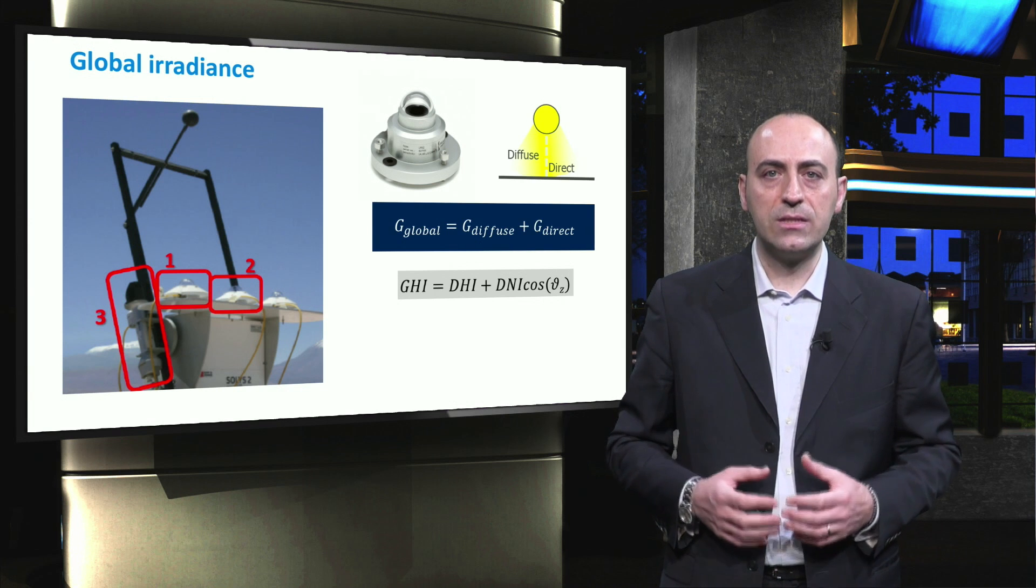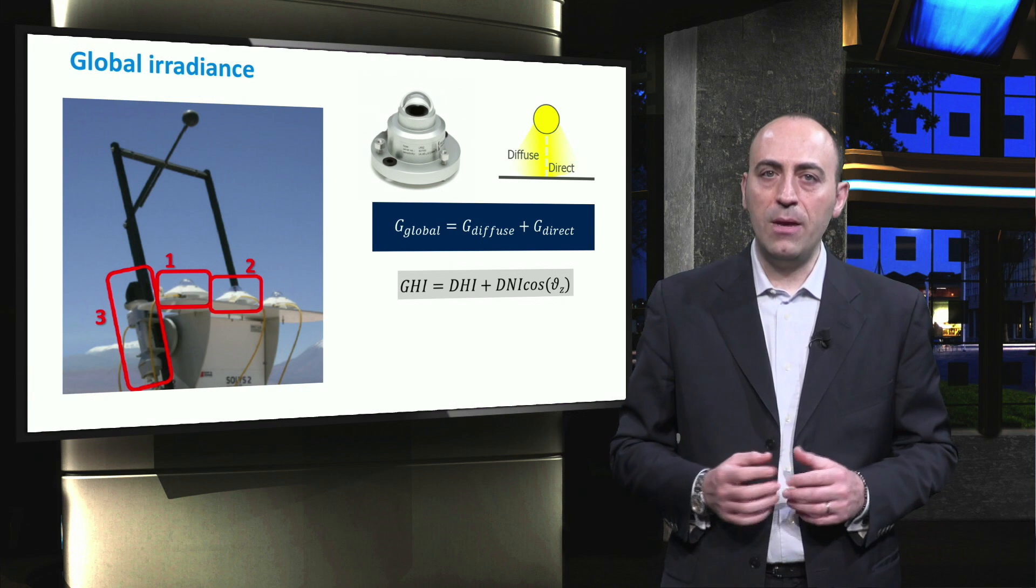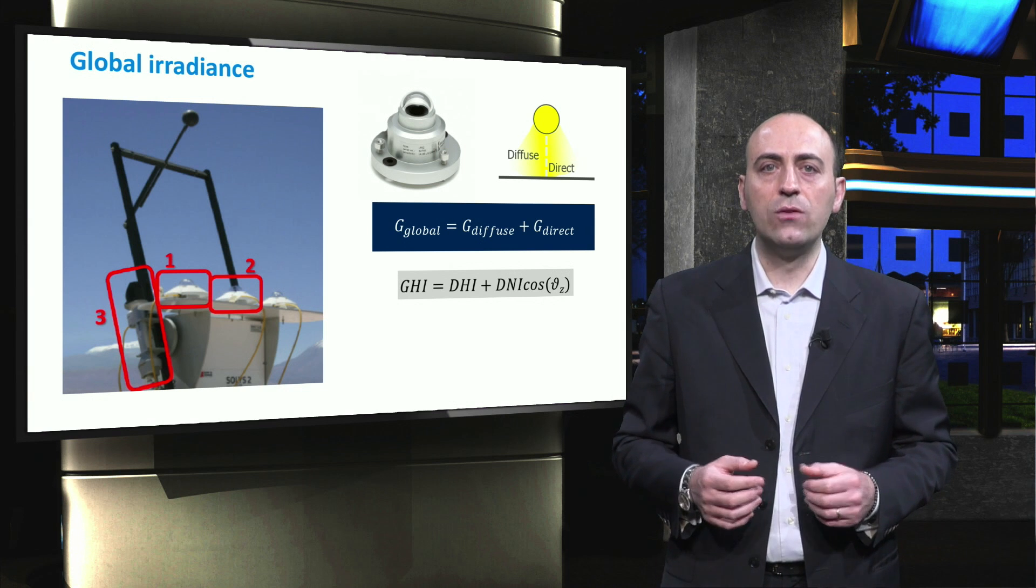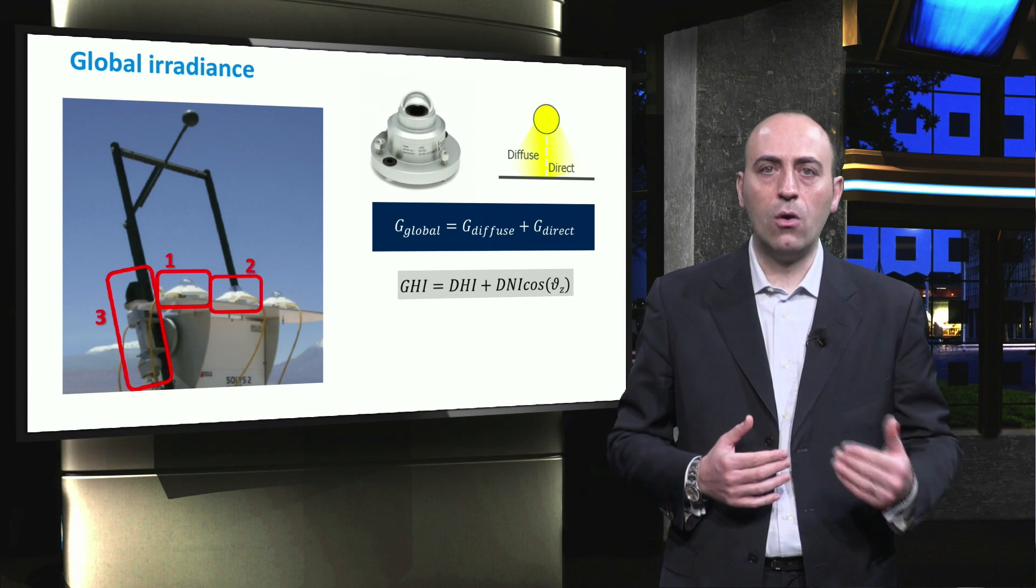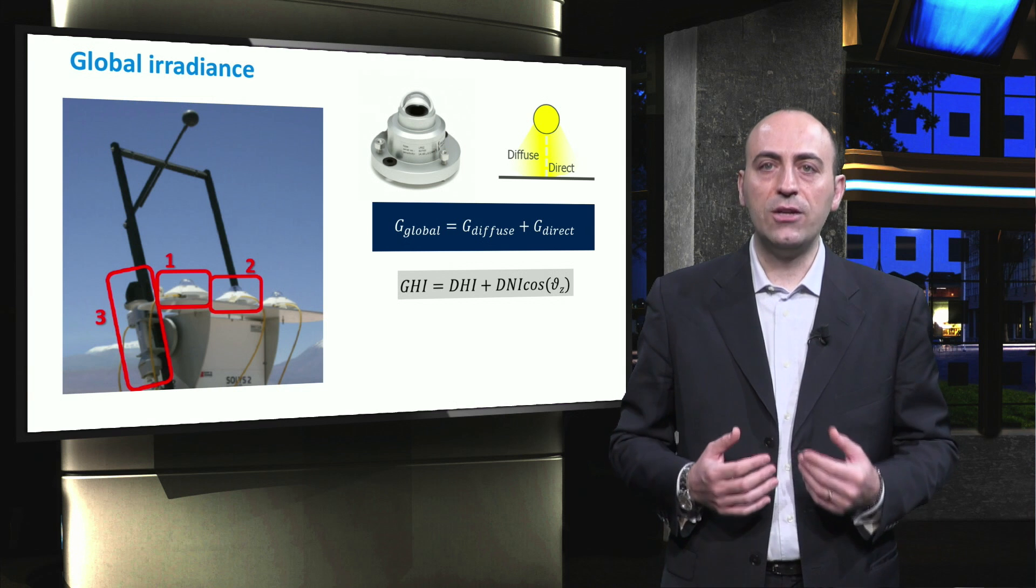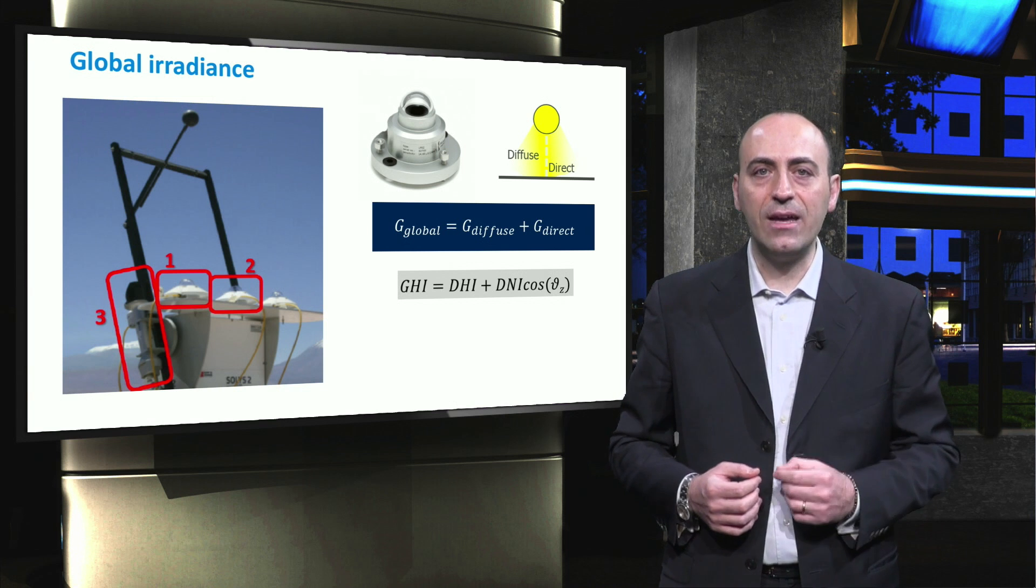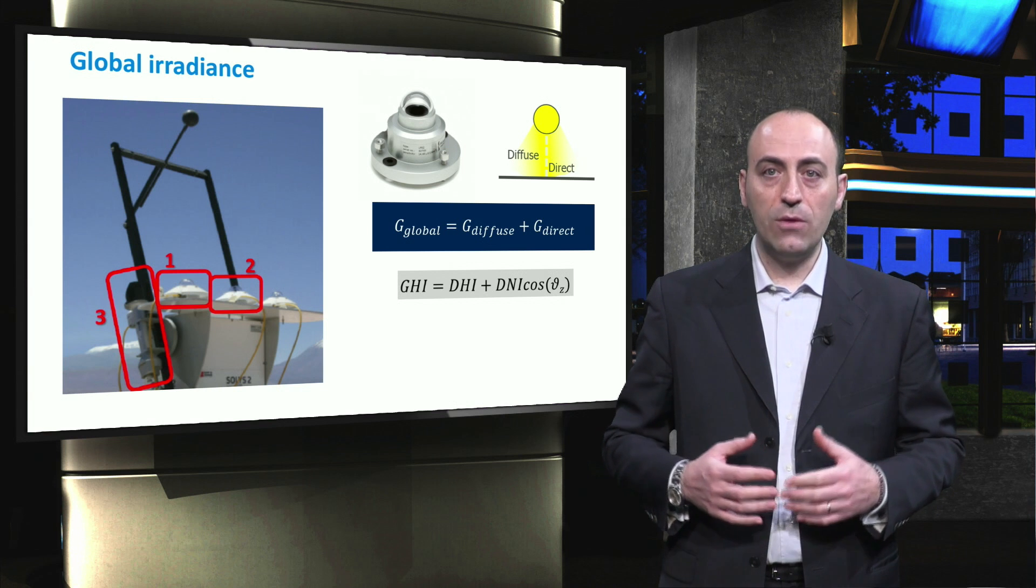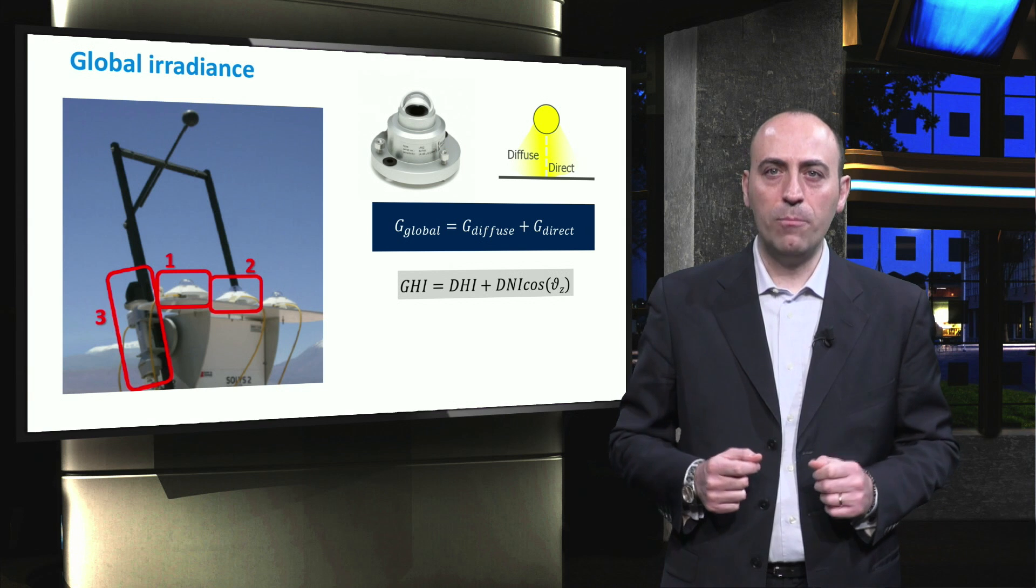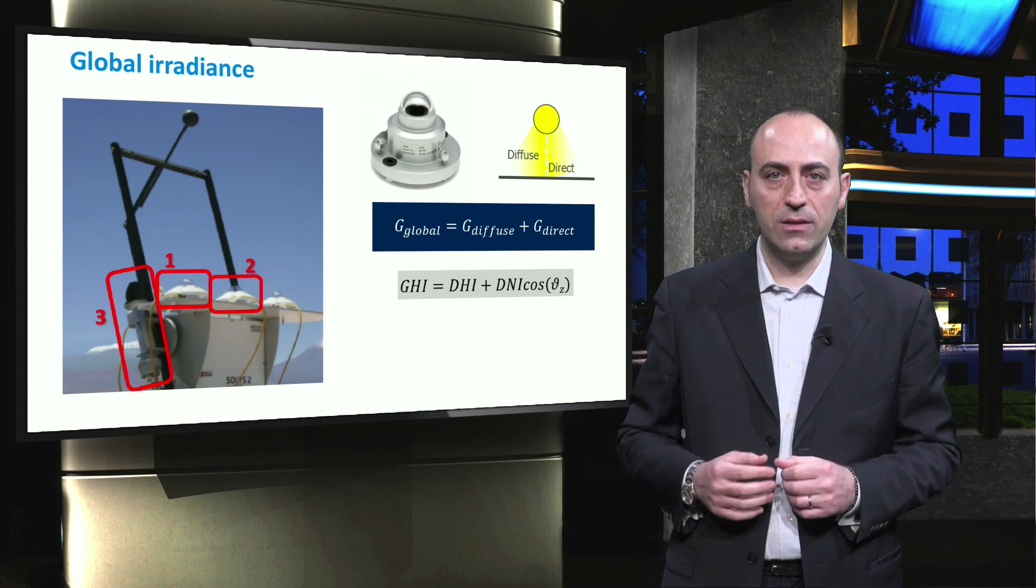Here, we define the global irradiance as the sum of the diffuse component and the direct component. Many times in literature, you can find also these acronyms. So, GHI stands for Global Horizontal Irradiance, DHI for Diffuse Horizontal Irradiance, and the DNI for Direct Normal Irradiance. Let's have a look in detail at these different components and how to measure them with a setup, such as the one depicted on the left.